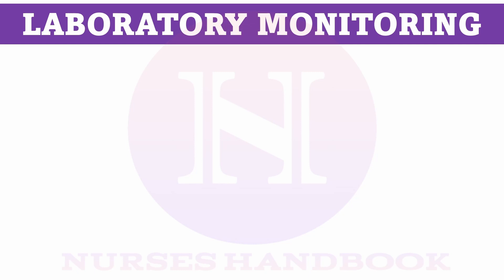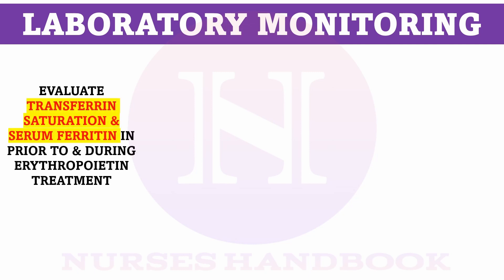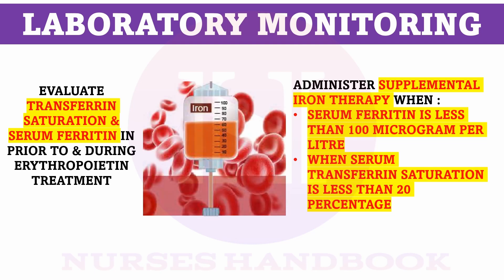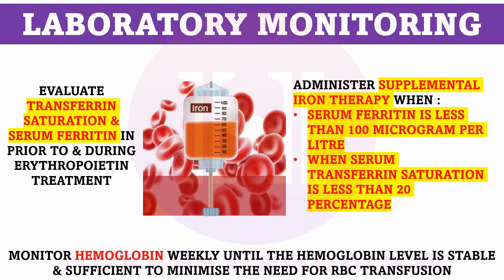Coming to the laboratory monitoring. Before and during erythropoietin treatment, we should check for transferrin saturation and serum ferritin level. If serum ferritin level is less than 100 mcg per litre and transferrin saturation is less than 20%, then administer supplemental iron therapy before planning to give injection erythropoietin. Monitor hemoglobin levels weekly until the level is stable.